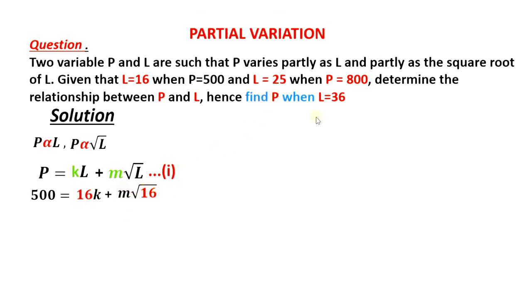And the second part, we are told L is 25 when P is 800, and therefore we will have P is 800 and L is 25, therefore we have 25K plus M root 25.